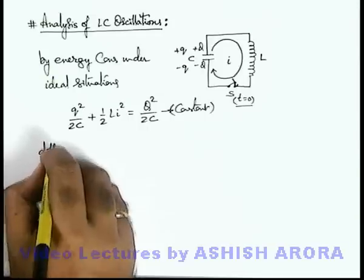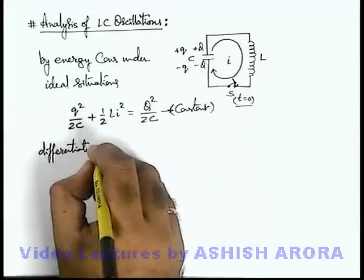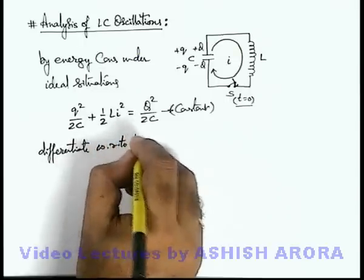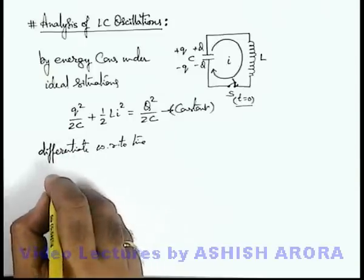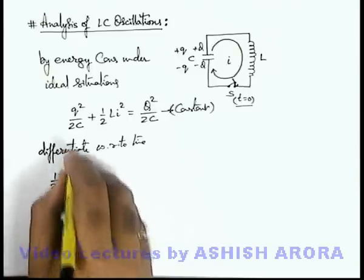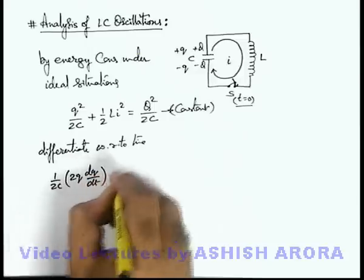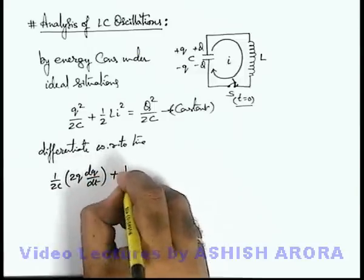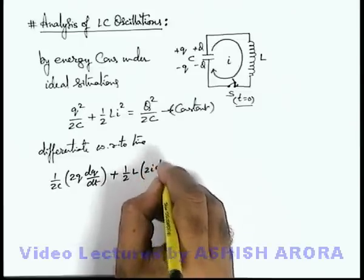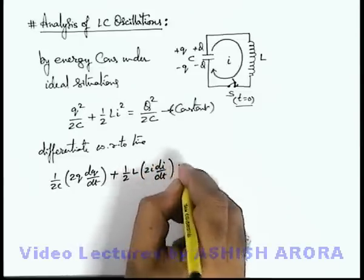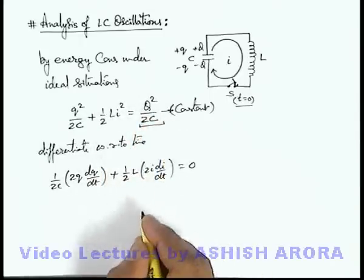Now if we differentiate this expression of energy with respect to time, the derivative of q² will be 2q·dq/dt, so we get (1/2C) multiplied by 2q·dq/dt, plus half·L multiplied by 2i·di/dt, and this must be equal to zero because the overall energy of the system remains conserved.